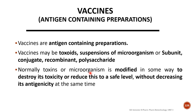When we reduce toxicity, we reduce the virulence of microorganisms in the body. In vaccine preparation, toxins or microorganisms are modified in some way to destroy their toxicity or reduce it to a safe level without decreasing antigenicity at the same time. So we maintain antigenicity while reducing toxicity — this is the principle of vaccine preparation.